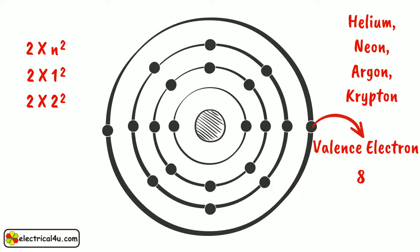The valence electrons of an atom are loosely bound with the nucleus and can be freed or removed by different methods, such as by heating or by applying electrical voltage. The valence electrons form the bonds that hold the atoms of a material together. Most of the properties of materials are determined by these bonds.